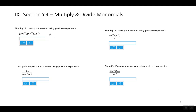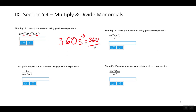Moving quickly through the next examples: 10 times 4 is 40, and 40 times 9 is 360. Combining the s's by multiplying — adding their exponents — gives s to the negative third power. So the simplified answer is 360 over s to the third power.